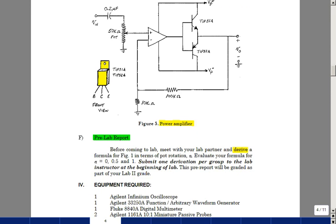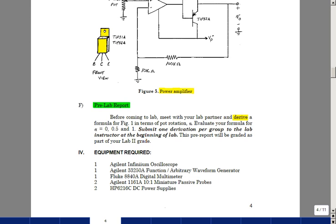So before you come to the lab I'd like you to meet with your lab partner, derive the formulas of the crossfader and maybe evaluate them in three different pot positions. I'd like you to submit one derivation per group to the lab instructor at the beginning of that lab. And they'll be part of your overall grade for lab two.